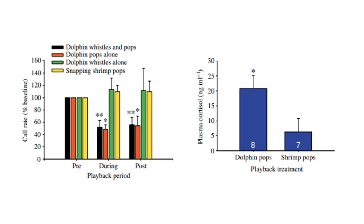This shows that toadfish can differentiate between cues that signal that a foraging predator may be nearby and other sounds. This may be an example of stimulus filtering, as the toadfish are focusing on and responding to biologically relevant information. This also demonstrates the proximate influences on call behavior. Additionally, males who were exposed to the pops had higher stress hormone levels, as shown on the y-axis in the second figure, than those who heard the control sound. This demonstrates the effects that various cues can have on the endocrine system depending on whether they are biologically relevant or not.